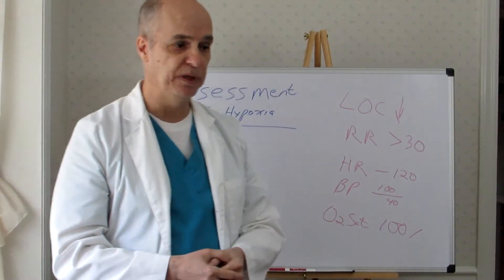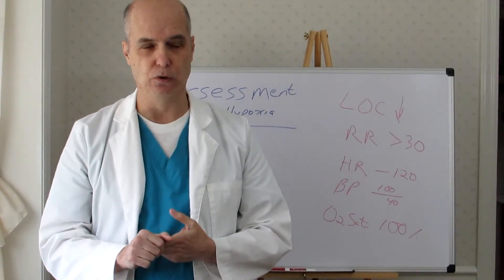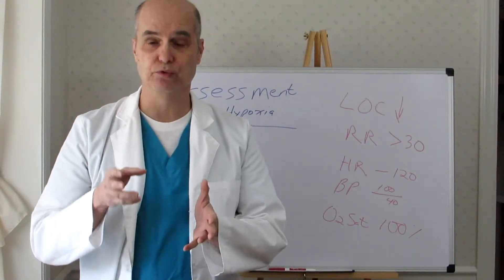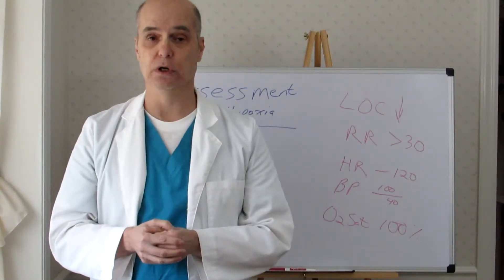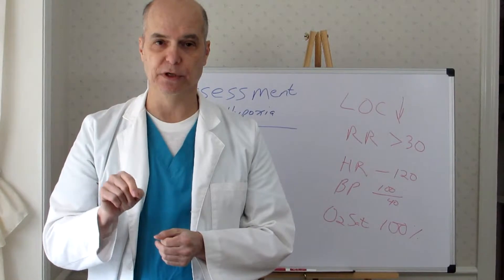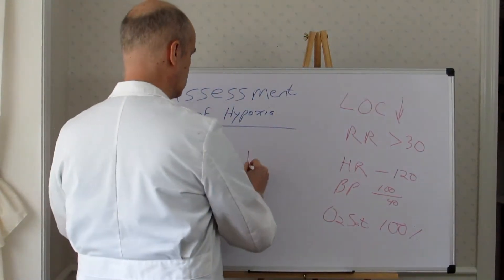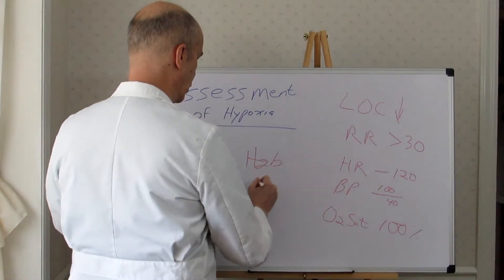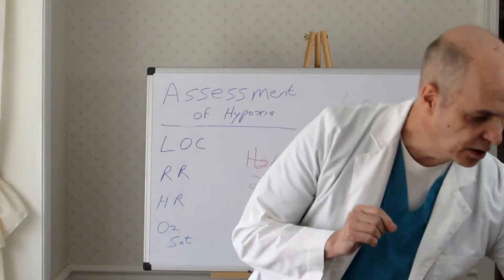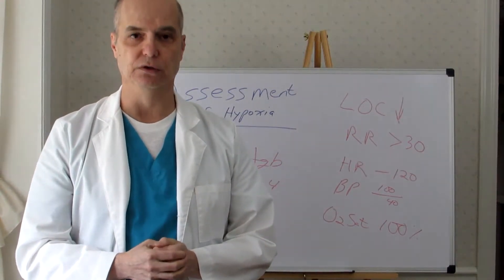I ran the blood gas. The pH was very acidic. PCO2 was elevated, though not too bad. The PO2, which is normally 80 to 100, was reading 700 — I had never seen that before. O2 sat was 100%. Then I ran it through our co-oximeter and got the hemoglobin. The hemoglobin was 2.4 grams per deciliter. The patient died about an hour later from acute tissue hypoxia and acute lactic acidosis.